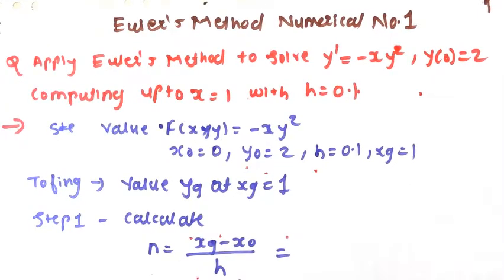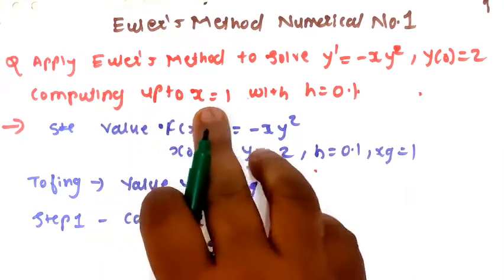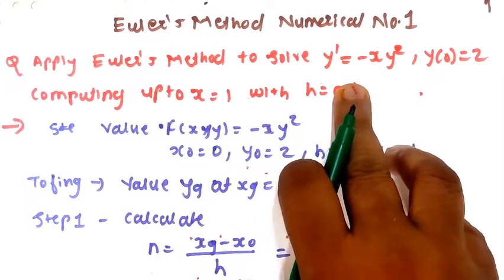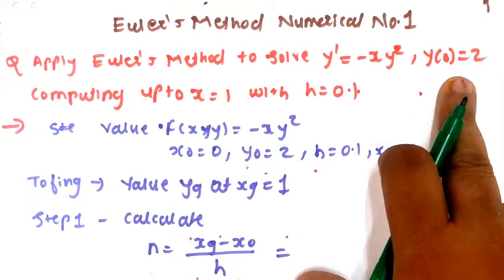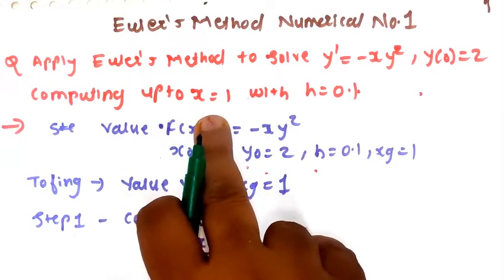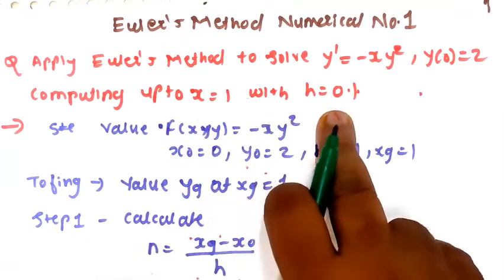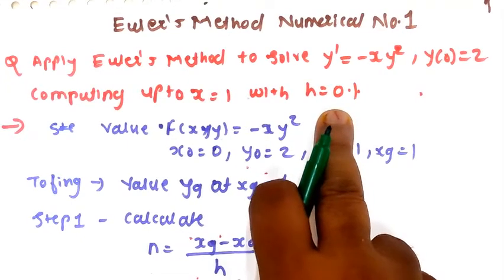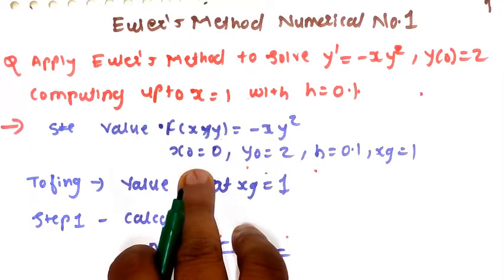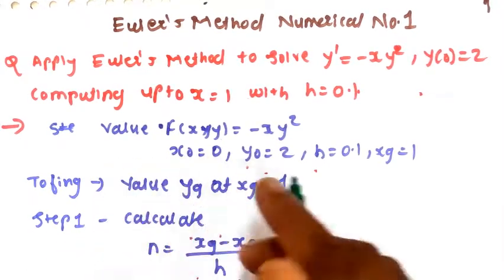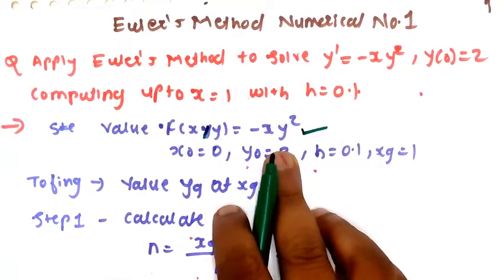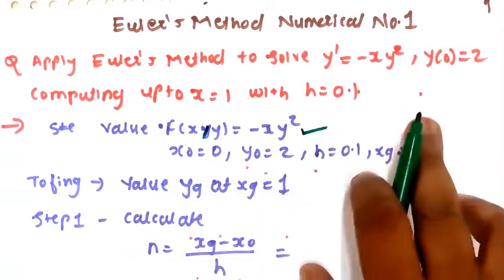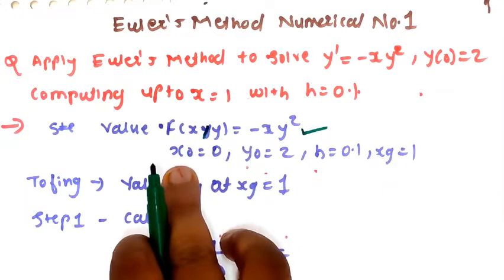Hello everyone. In this video we are going to solve a numerical using Euler's method. We apply the Euler method to solve y' = -xy², with the given conditions y(0) = 2, completing up to x = 1 with h = 0.1. The function f(x, y) is -xy² and the initial condition is y₀ = 2, meaning at x₀ = 0, y₀ equals 2.